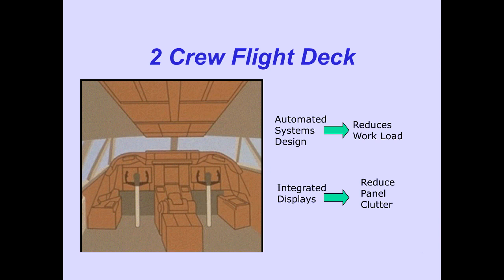The 747-400 is a long-range intercontinental jet transport with a two-man crew flight deck. Automated systems design reduces crew workload, and the integrated displays reduce instrument panel clutter.